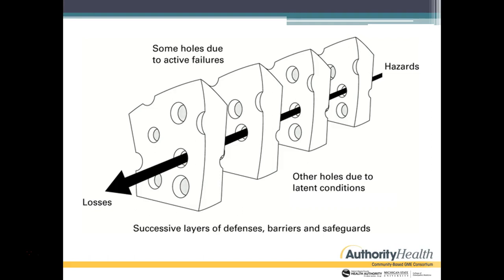Latent conditions are defects in the design and organization of processes and systems — things like poor equipment design, inadequate training, and insufficient resources. These are often unrecognized or they become accepted parts of work, leading to workarounds, which we don't want. Latent conditions can lead to active failures. Active failures are errors whose effects are felt immediately — for example, if you give someone the wrong medication and they go into an anaphylactic reaction, that's an active failure.